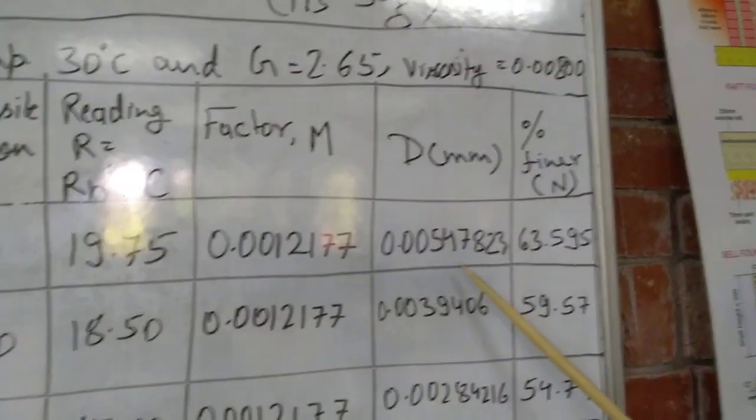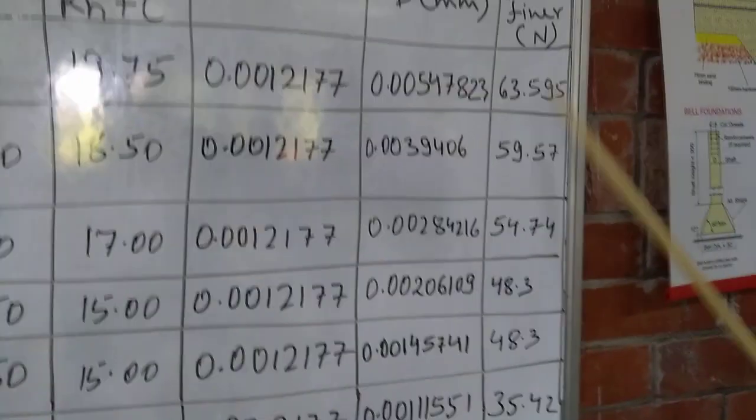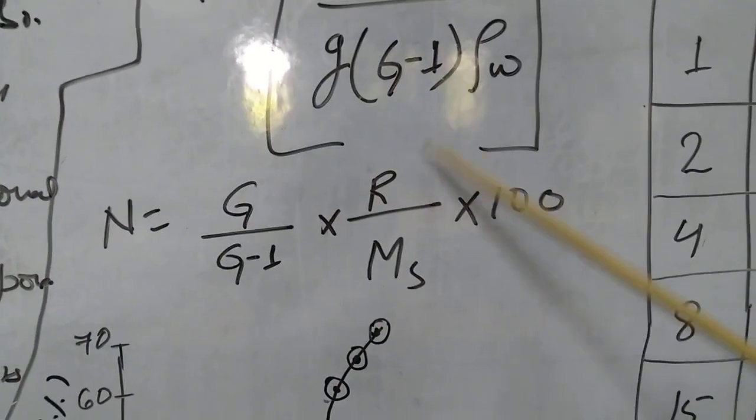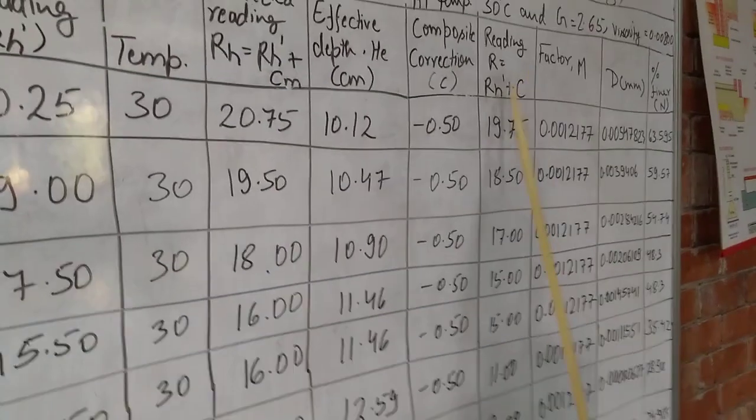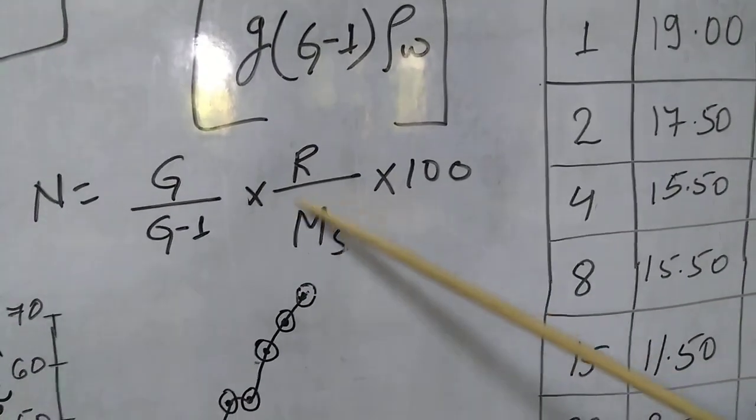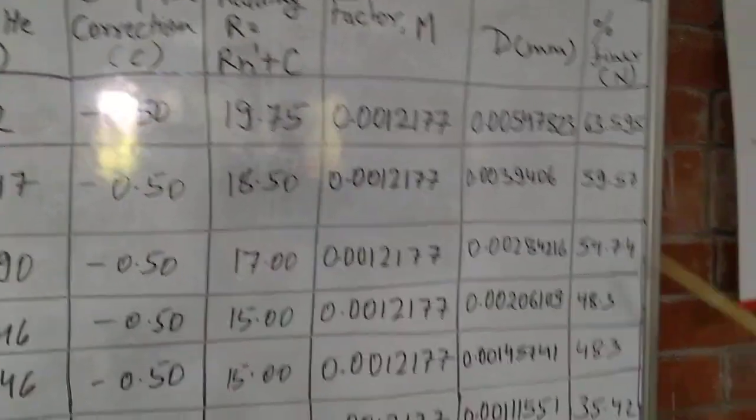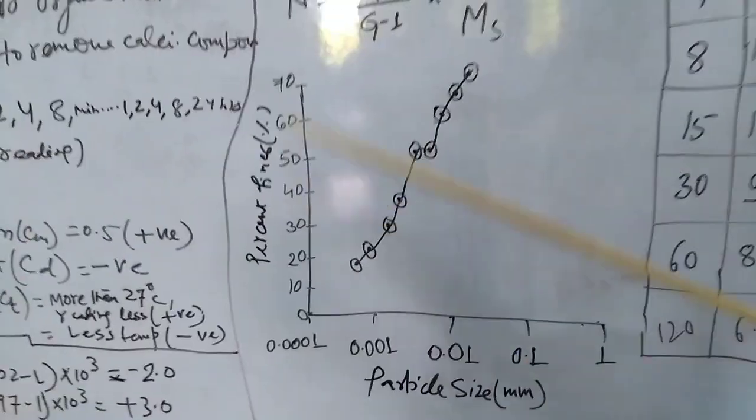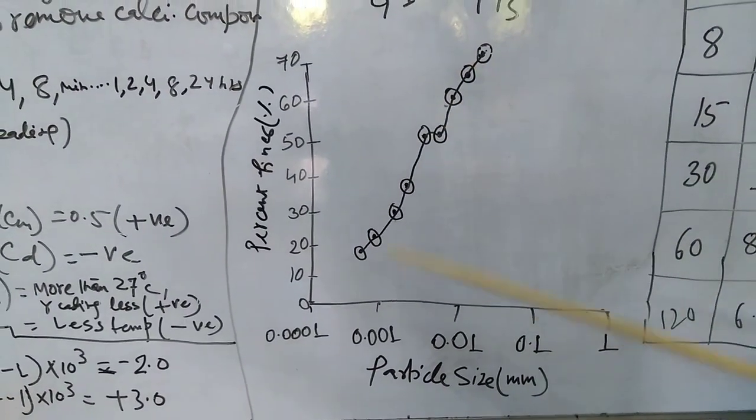The particle size is given in this column. And the percent finer we can calculate by this formula. G, that we know, is equal to 2.65. R we have already calculated here. R is equal to R dash plus C, that is 20.75. And mass of the solid is 50 grams. Then we can find out for different values the different percent finer. Using the particle size and the percent finer, we can draw the graph. Once you draw the graph, this graph will indicate the particle size distribution graph. Thank you.